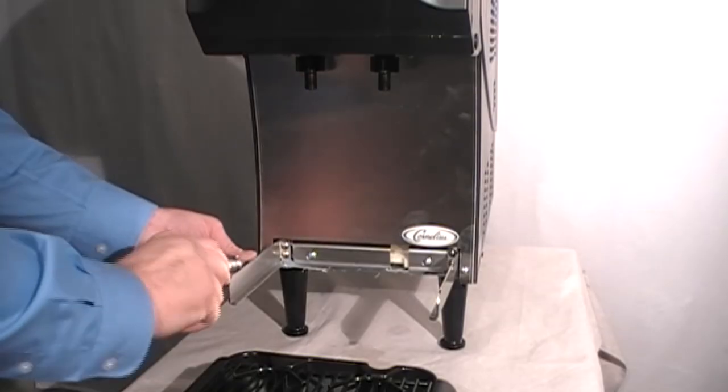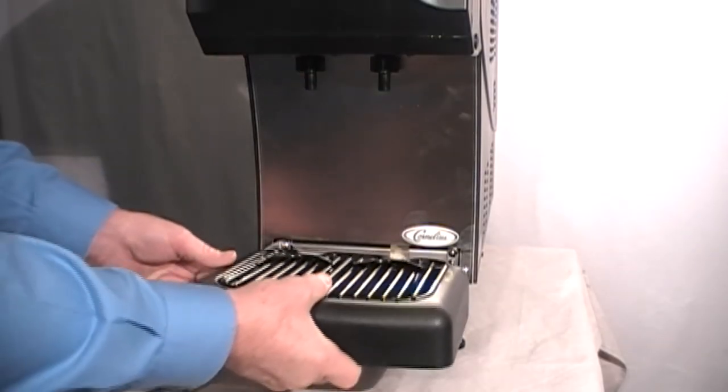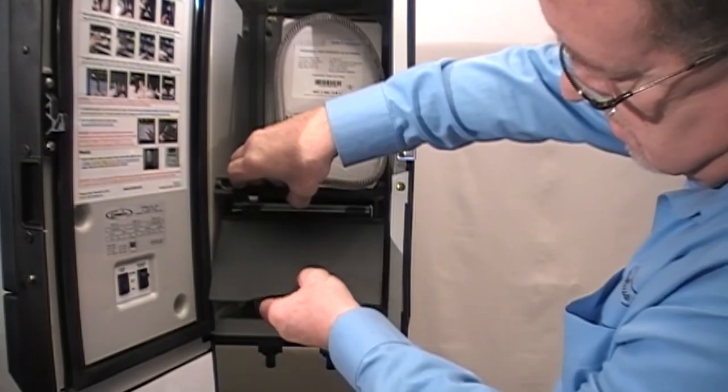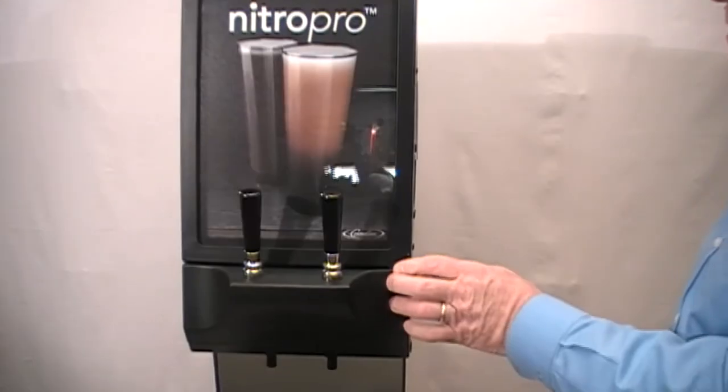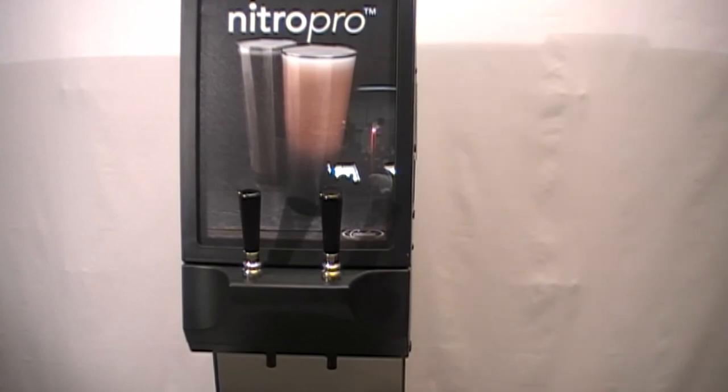Now replace the front stainless steel splash panel, drip tray, cup rest and install the pump deck cover inside the cabinet. The Nitro Pro Mini Dispenser is now ready for use.